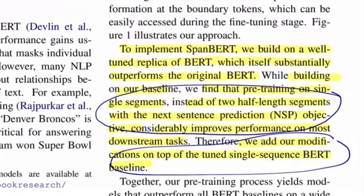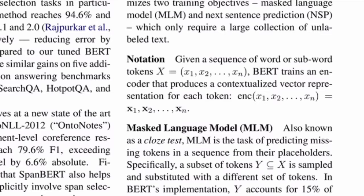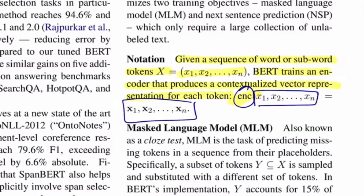In the background section, authors discuss the BERT architecture. Given a sentence of word or subword tokens, BERT trains an encoder that produces a contextualized vector representation of each token. Pictorially, you input each token — words or sub-tokens — pass them through the encoder block which is the BERT model, and at the output end for each token you get its respective contextualized embeddings.